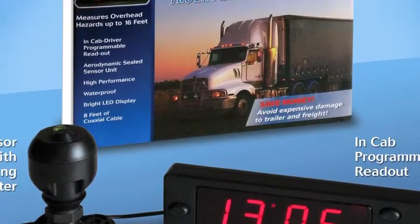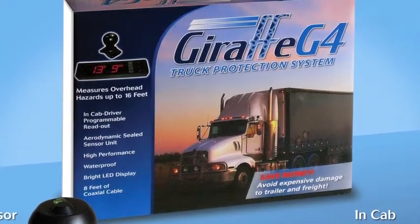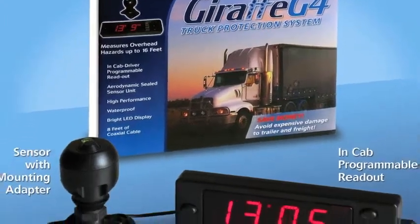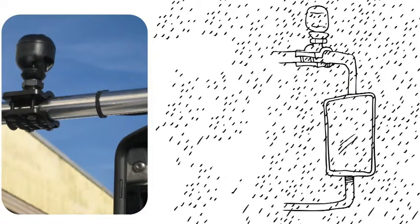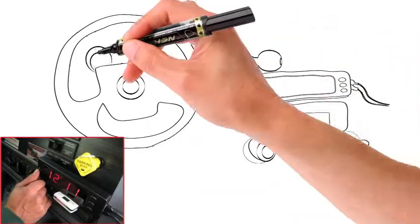This is the Giraffe G4 system that will protect your tractor trailer or RV from hitting an overhead obstacle. It's a two-part system: an exterior sensor that's water and weatherproof,